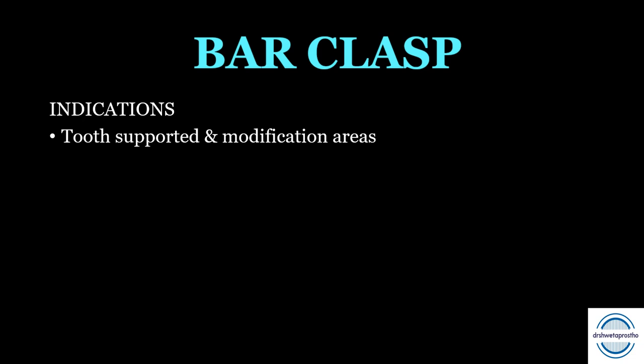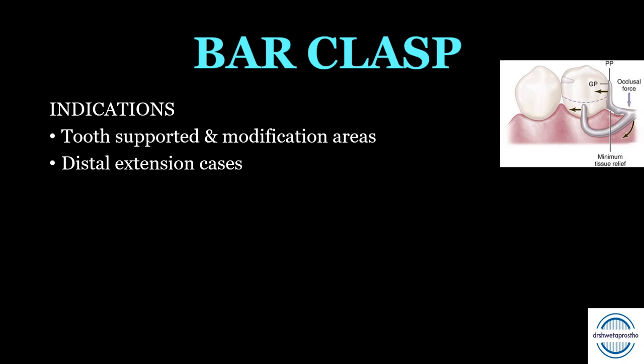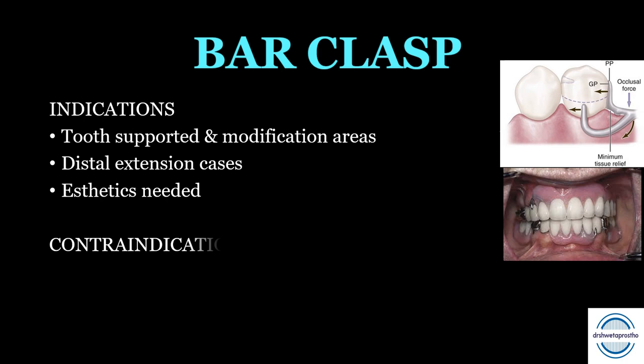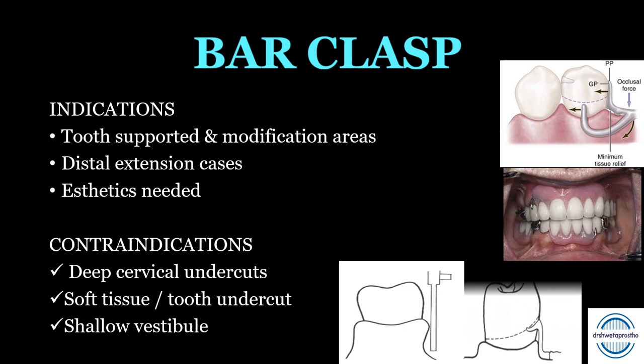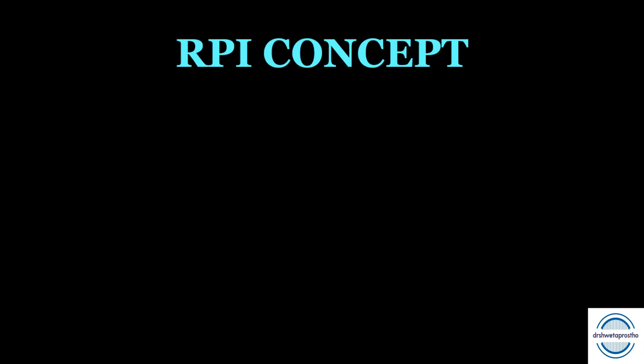The infrabulge/bar clasp can be given in any case — tooth supported, modification area, or distal extension — because of its flexibility, applying less force on the distal abutment. It is the first choice for distal extension cases and where aesthetics are needed due to less metal show. Contraindications: bar clasp is never given if there is a deep cervical undercut, soft tissue or tooth undercut, or a shallow vestibule, because the approach arm requires minimum 4 mm clearance from the free gingiva.